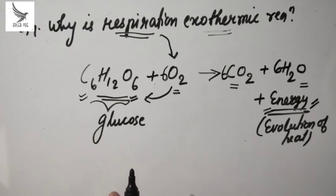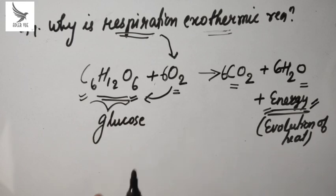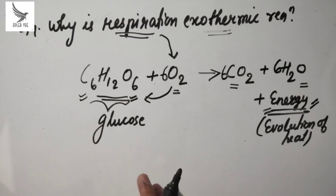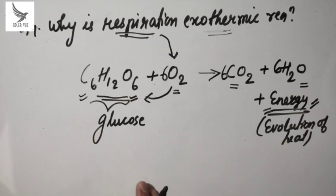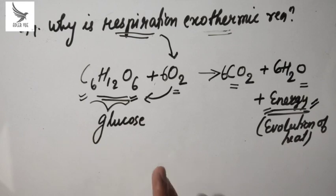That equation is called a skeleton equation. We have already covered unbalanced and balanced equations. When we write a reaction, we can write it as an unbalanced reaction or a balanced reaction, but the important one is the balanced reaction. Whenever we write a reaction, it is necessary that we write it in a balanced form. So let's see the fifth question.